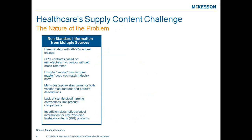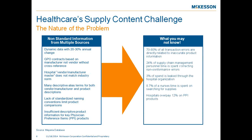When you start taking a look at trying to get all the information we need for some products, especially PPI items, there's not enough space in our systems to really do that. 70 to 80% of all transaction errors happening in the supply chain today are directly related to inaccurate product information.